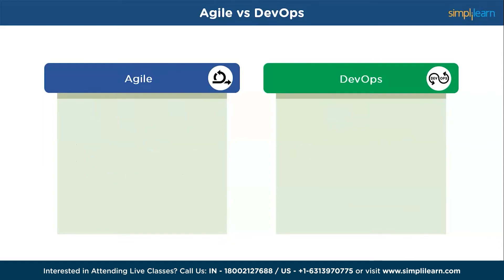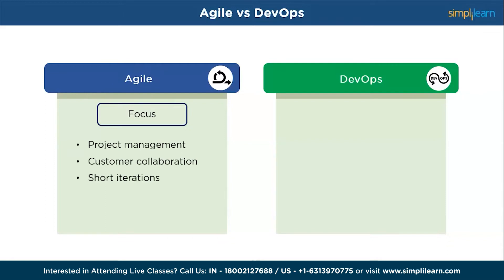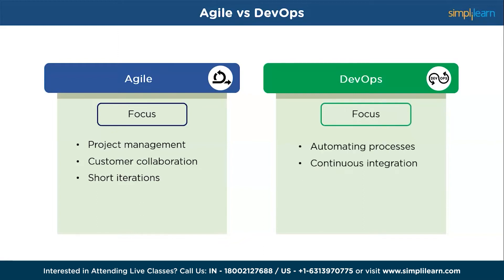Let us see the focus of Agile and DevOps. Agile focuses on effective project management, closer customer collaboration, and delivering working software in short iterations. DevOps focuses on automating processes, continuous integration and delivery, infrastructure as code, and improving communication and collaboration between teams.